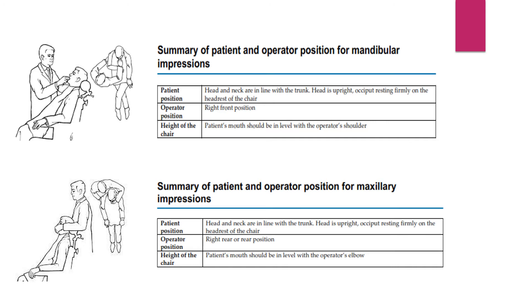For patient and operator positions: for mandibular impressions, the patient's head and neck are in line with the trunk, head is upright, occiput resting firmly on the headrest. The operator is in the right-front position, and the patient's mouth should be at the level of the operator's shoulder. For maxillary impressions, the head position is the same, but the operator is in the right-rear or rear position, and the patient's mouth should be at the level of the operator's elbow.